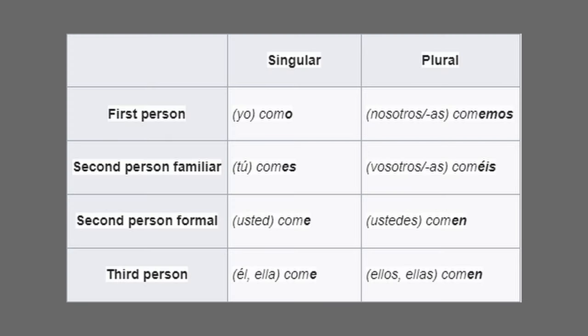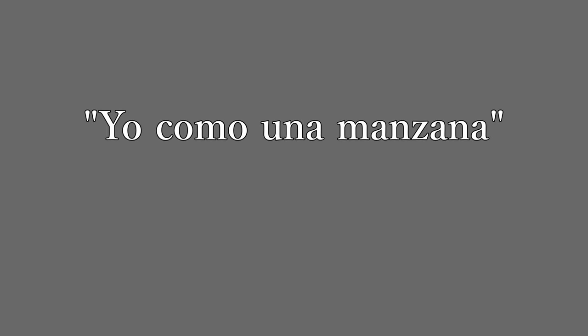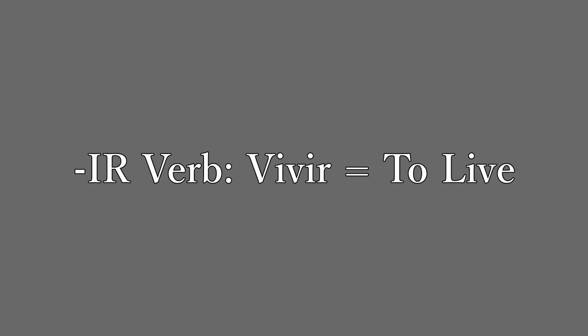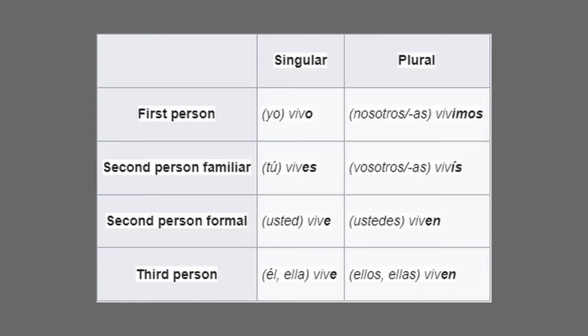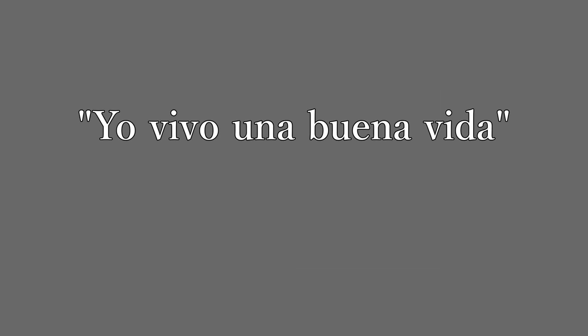Next, the ER verb comer, meaning 'to eat': yo como (I eat), tú comes (you eat), usted come (you eat formally), él/ella come (he/she eats), nosotros comemos (we eat), vosotros coméis (you all eat), ustedes comen (you all eat), ellos/ellas comen (they eat). Example: yo como una manzana — I eat an apple. Now the IR verb vivir, meaning 'to live': yo vivo (I live), tú vives (you live), usted vive (you live formally), él/ella vive (he/she lives), nosotros vivimos (we live), vosotros vivís (you all live), ustedes viven (you all live), ellos/ellas viven (they live). Example: yo vivo una buena vida — I live a good life.